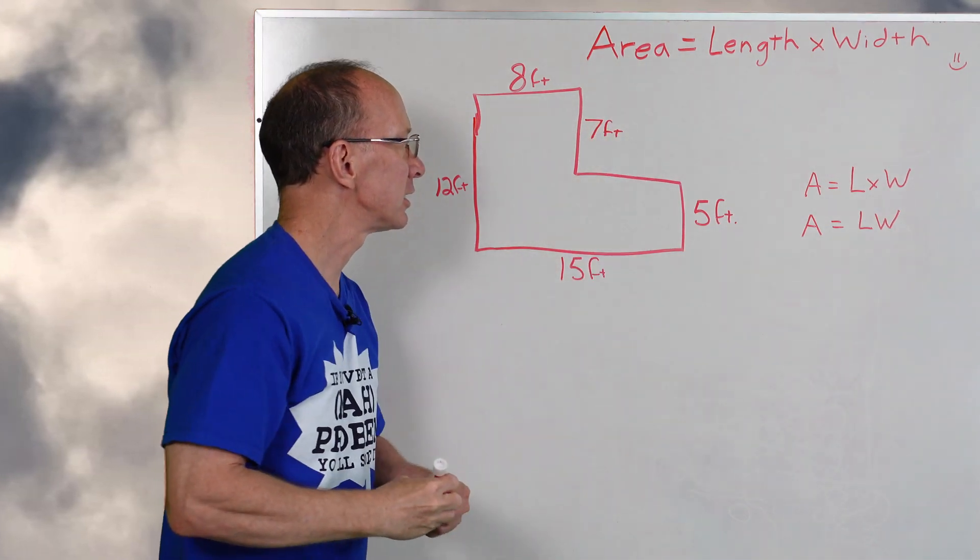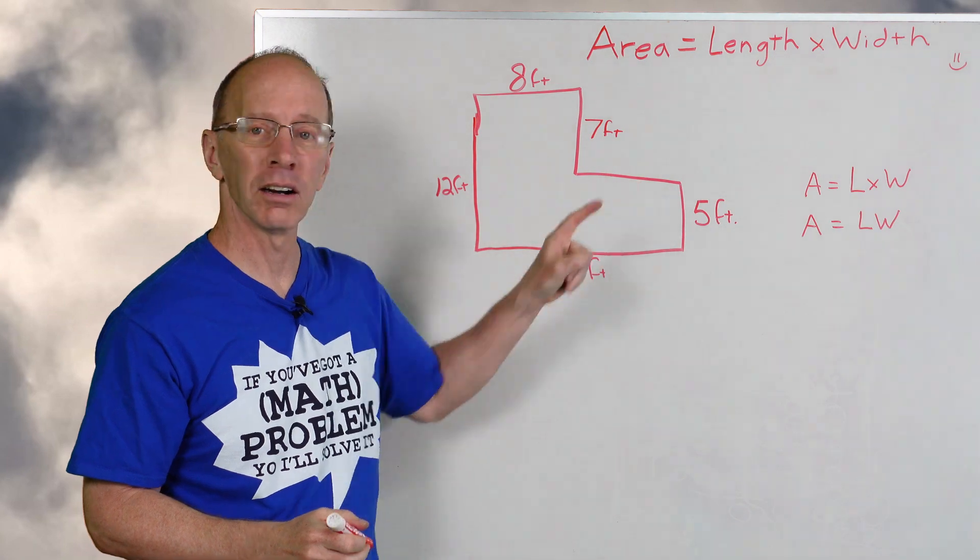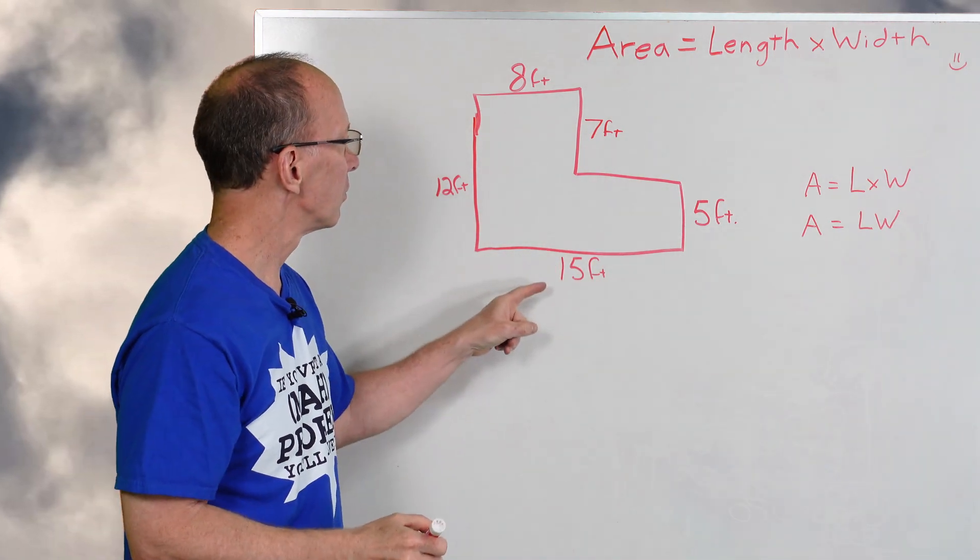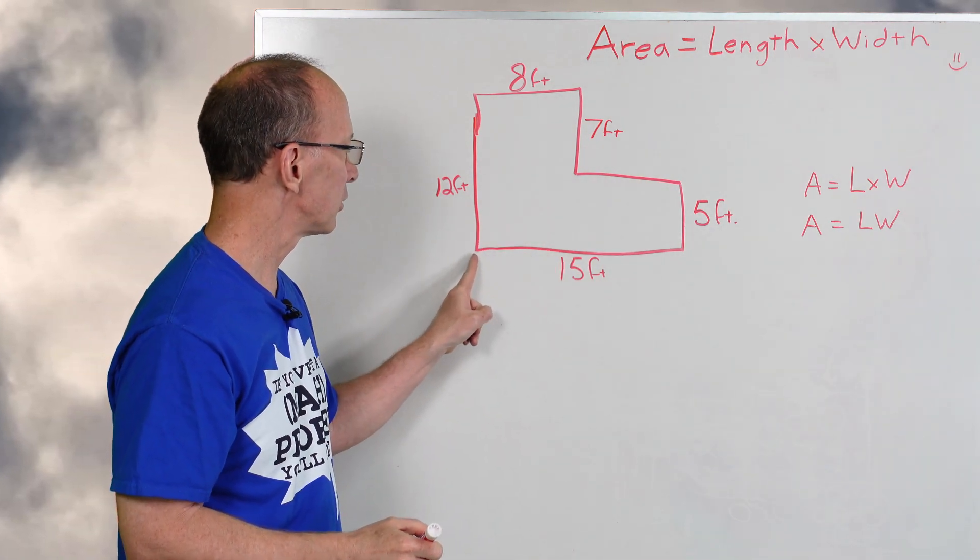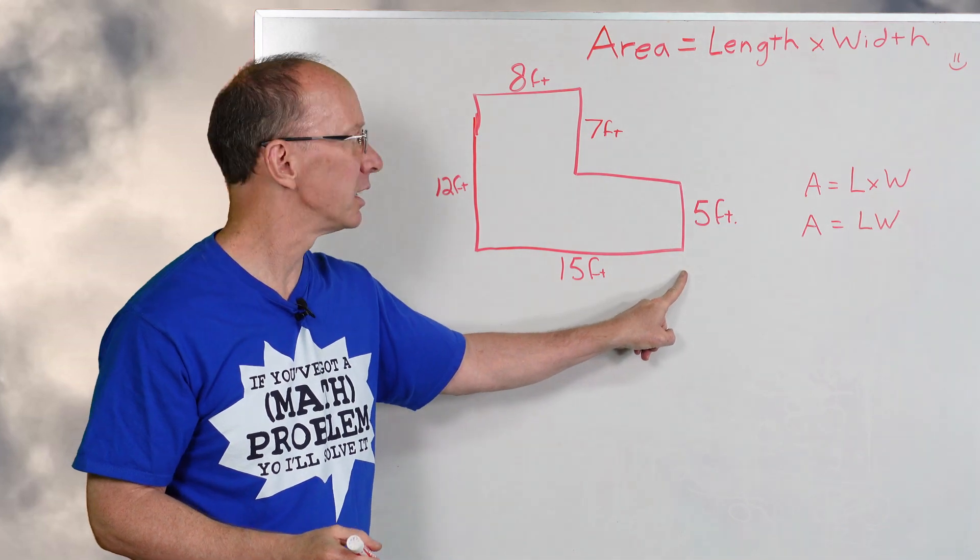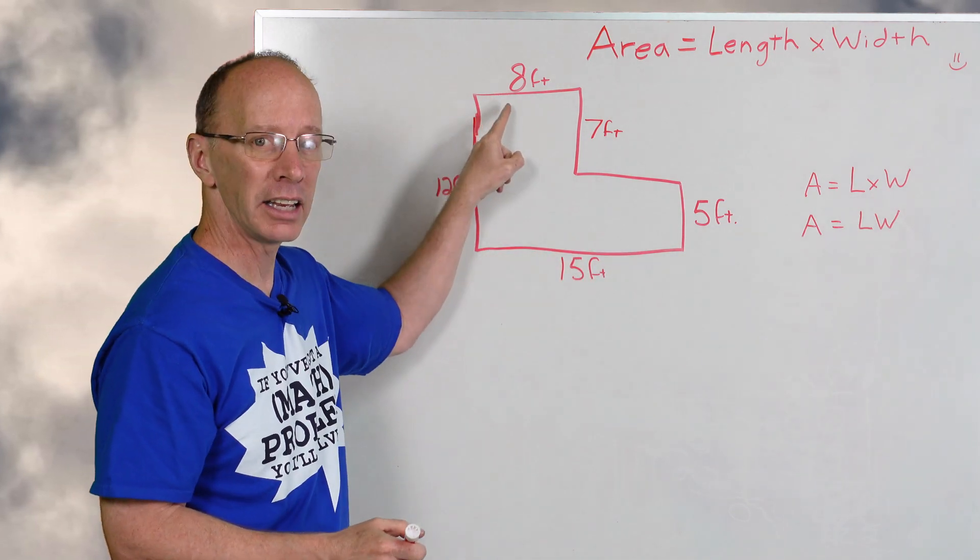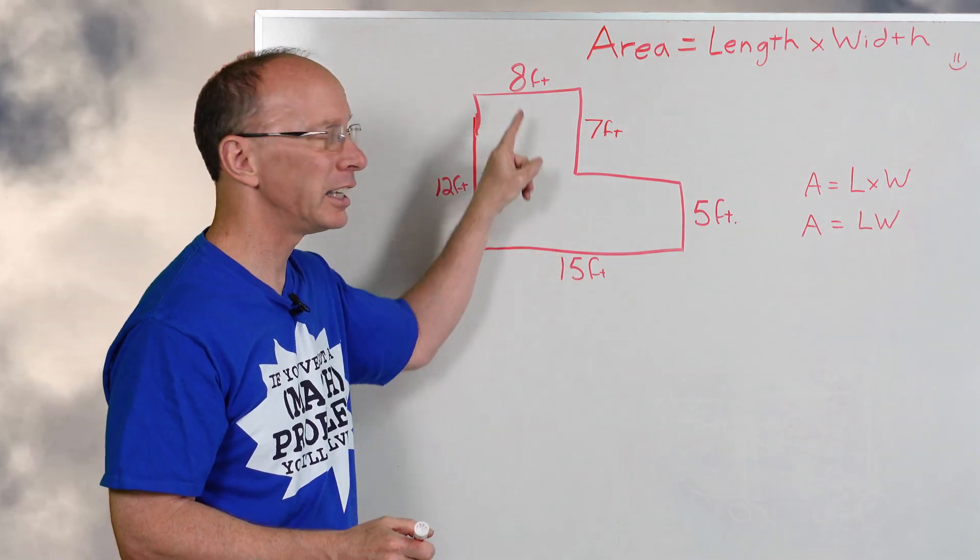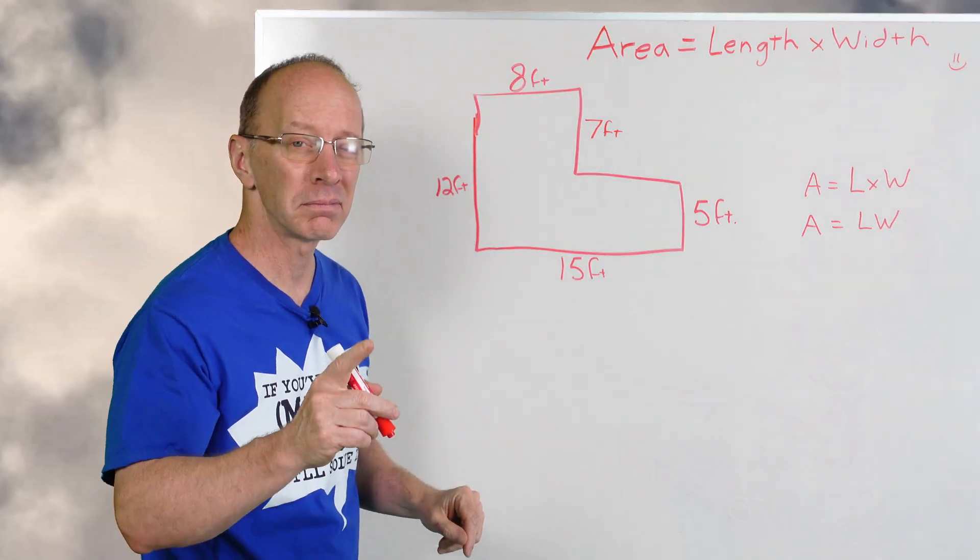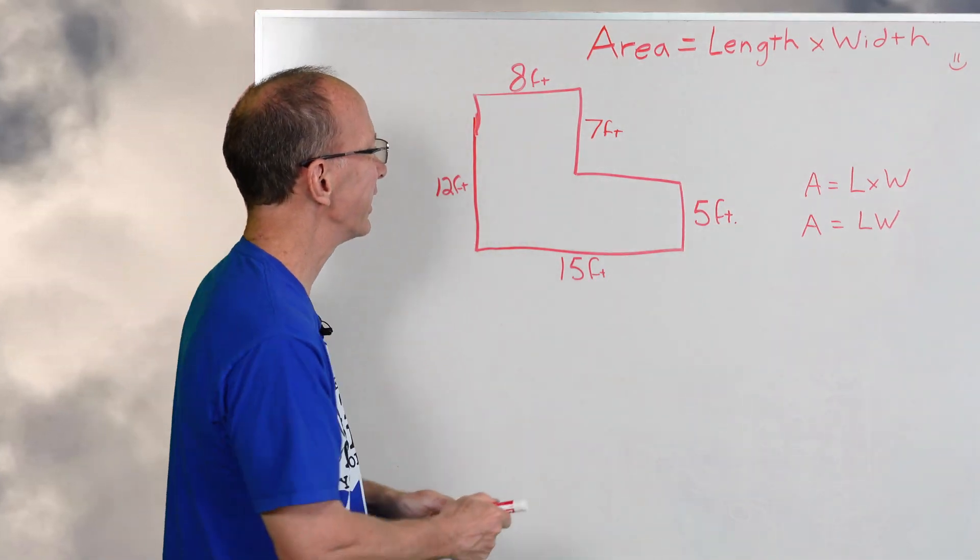Now I still need to figure out from here to there. The total distance from here to there is 15, and I have 8 feet here. So 15 minus 8 is 7. I'll put another 7 feet right here.